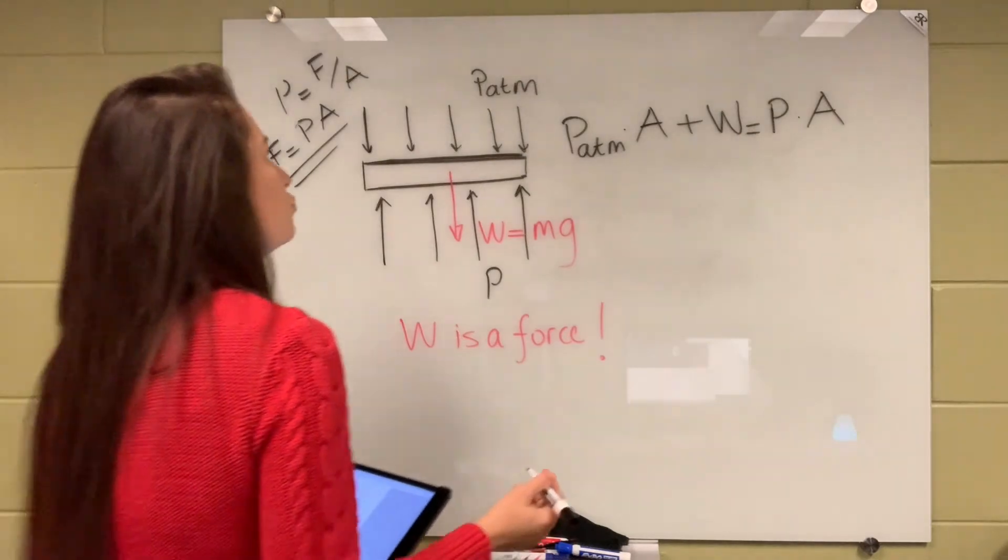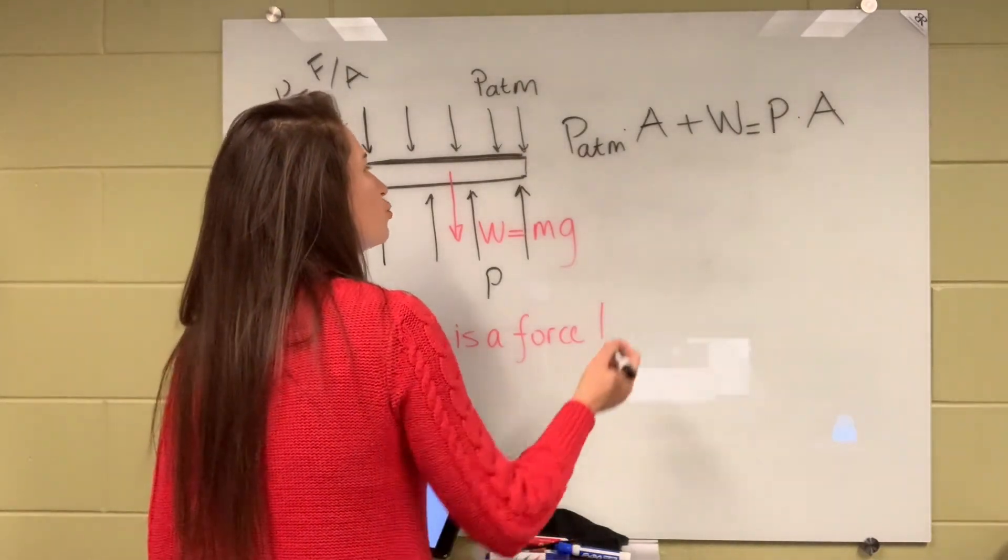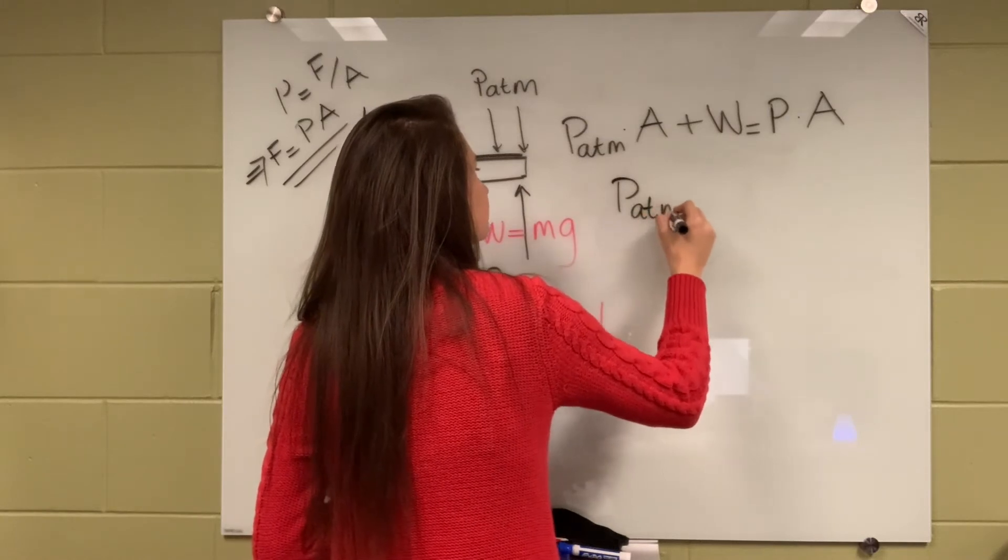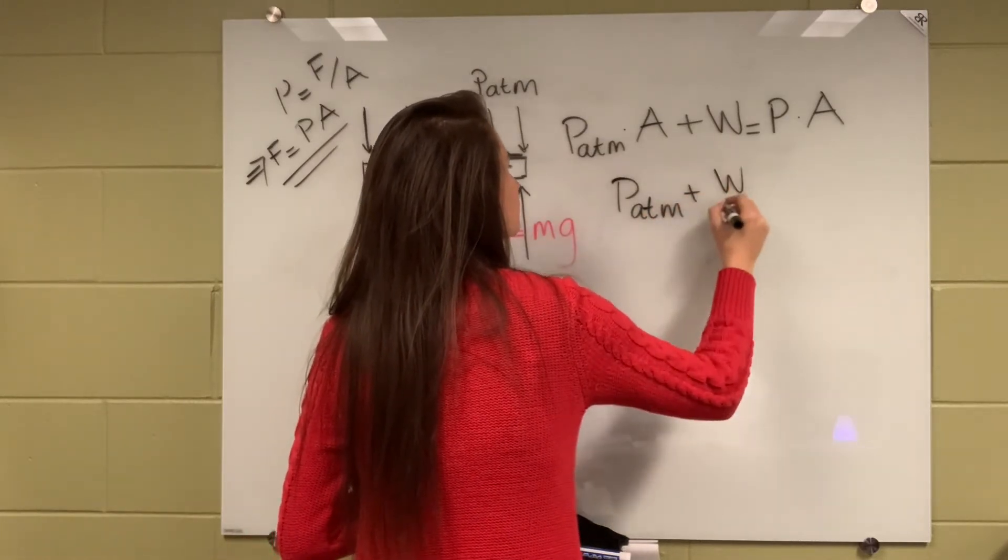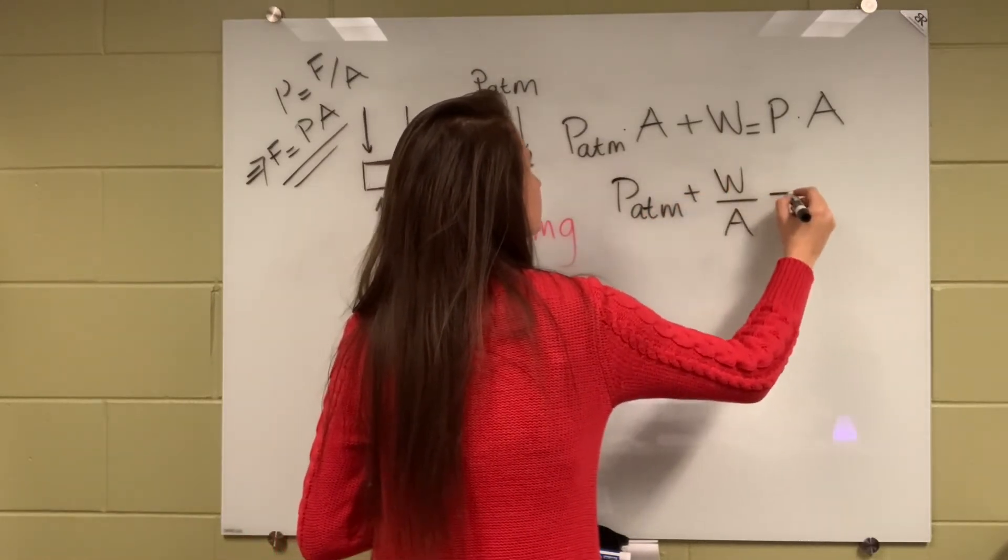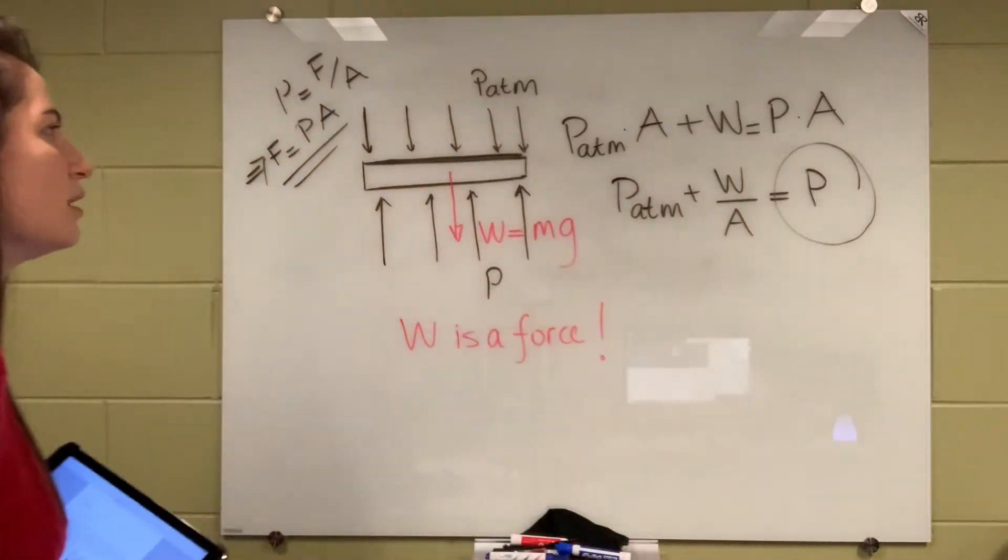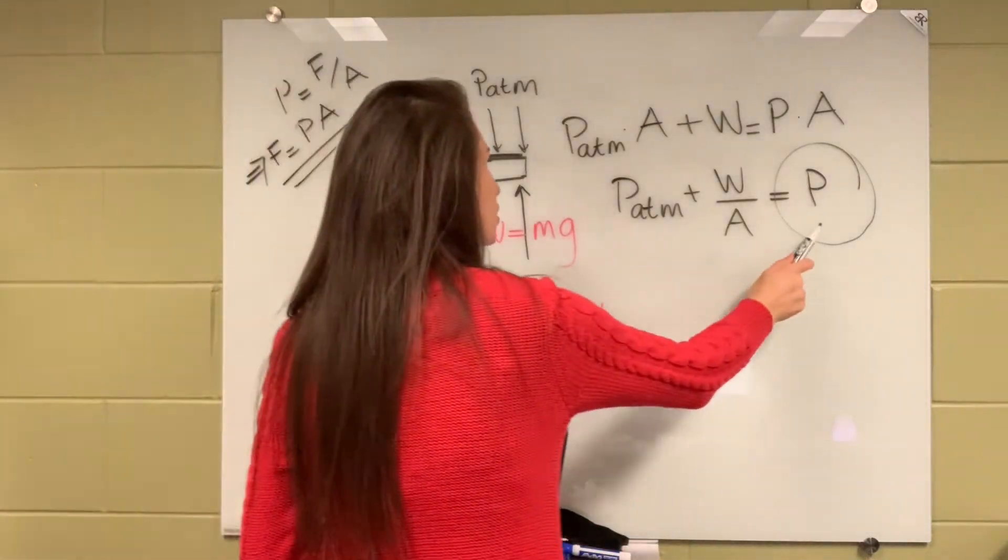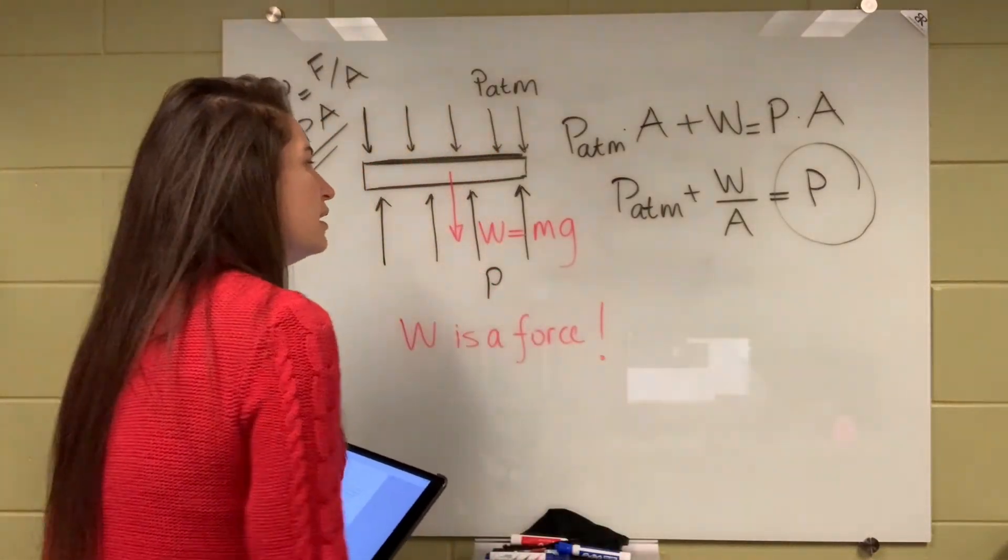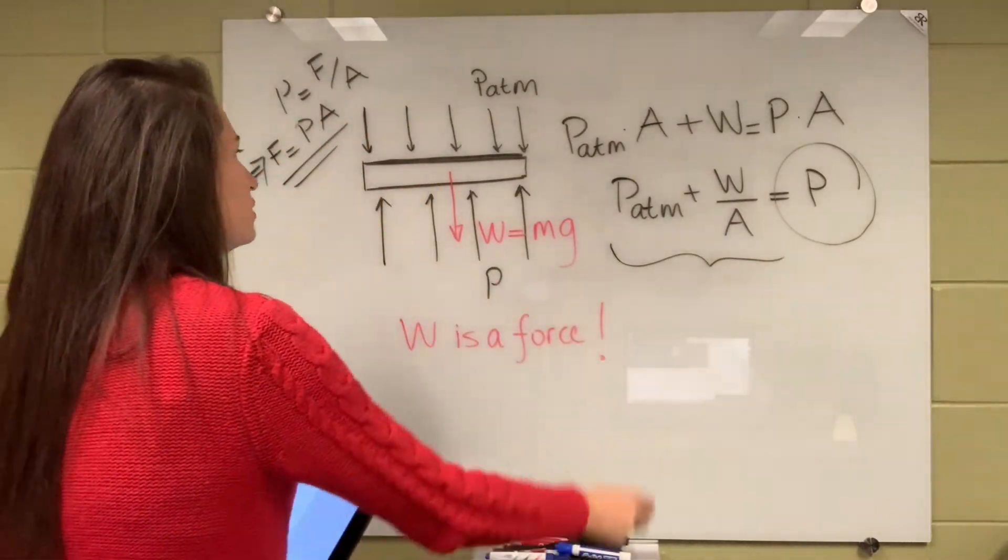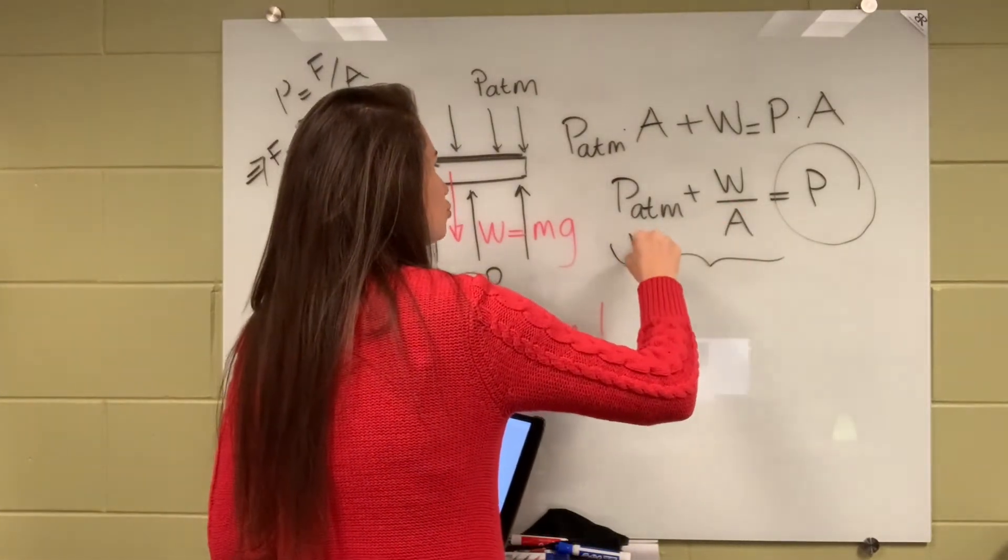And what we can do is divide each term by area. So this is what we are trying to calculate. Let's see the other terms in the equation. This one is already given to you.